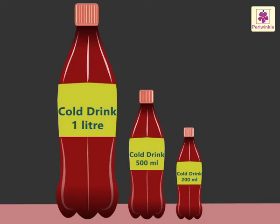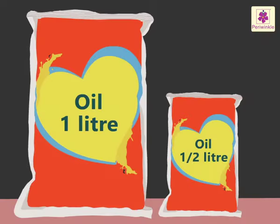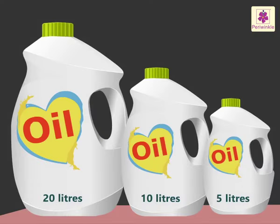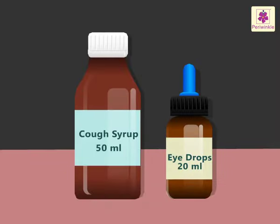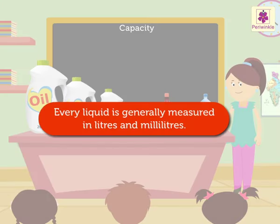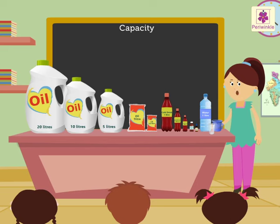Let's have a look at a few such examples. Cold drinks are sold in bottles that can hold 200 milliliters, 500 milliliters, and 1 liter. Cooking oil is sold in pouches that can hold half a liter or 1 liter, while big cans can hold 10 or 20 liters of oil. Certain medicines like cough syrups and eye drops are sold in small bottles that hold liquid in milliliters. Remember, kids — every liquid is generally measured in liters and milliliters!